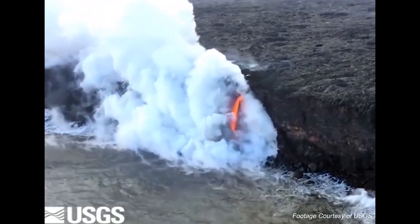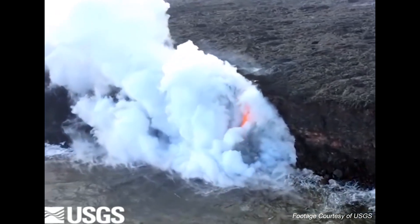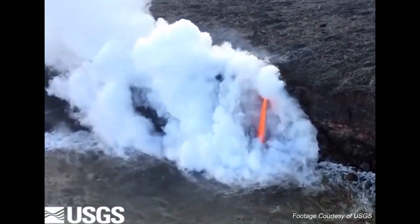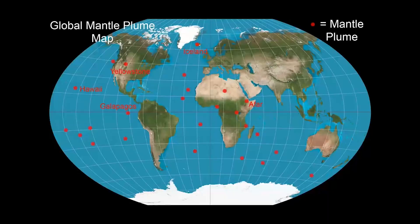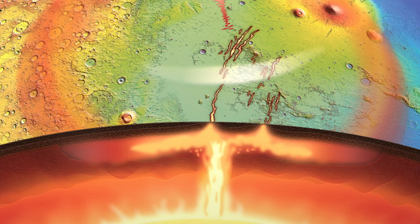This basaltic lava on Hawaii was formed when a mantle plume partially melted the underlying mantle. Here's the global distribution of mantle plumes. Note that other planets like Mars and Venus, which don't have plate tectonics, also have mantle plumes. Mantle plumes then are not obviously related to plate tectonics.